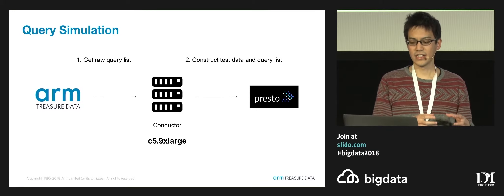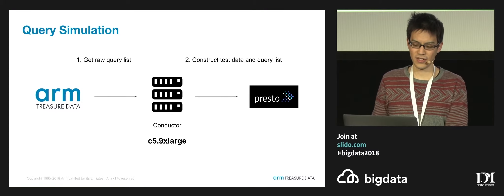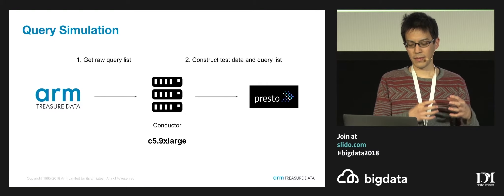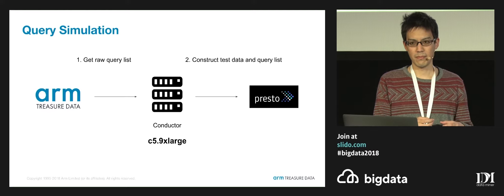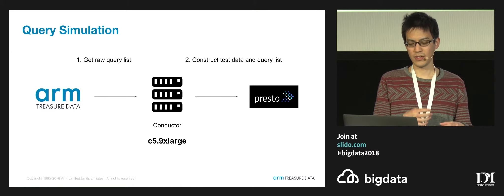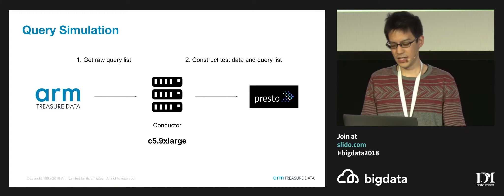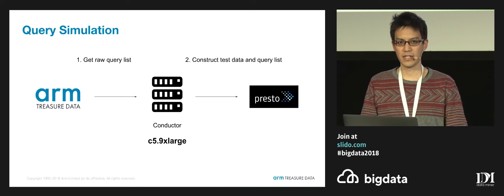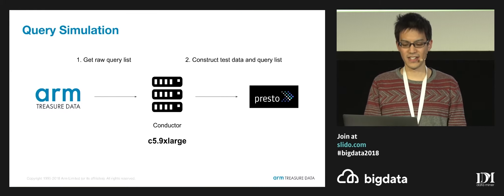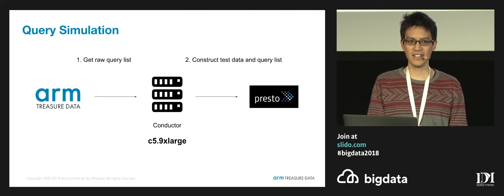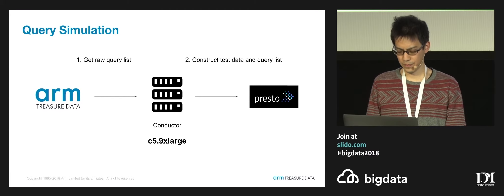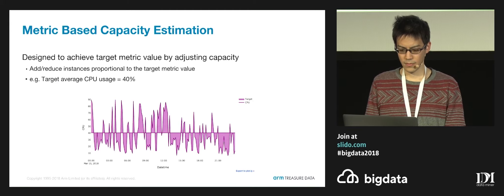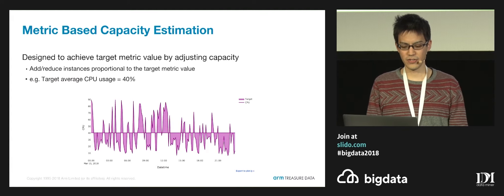After the query cluster is created, we submit these queries into the non-production cluster. To minimize the time taken for this query simulation, we use C5.9xlarge instances so that we can get much more parallelism to simulate the production workload in the non-production environment.